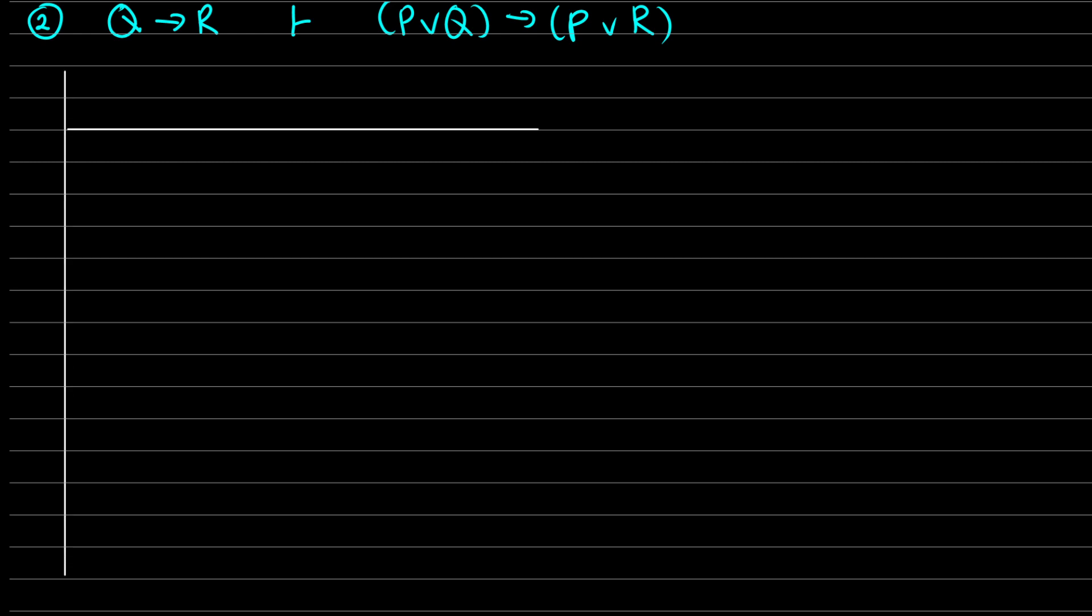So I'm going to actually introduce lines for this because I think I might need them. So we have one assumption in this case. Our assumption is that we have Q arrow R. Okay, so this is a hypothesis. Now we want to prove that if we have P or Q, then we get P or R.